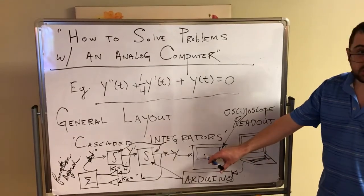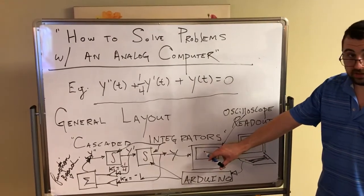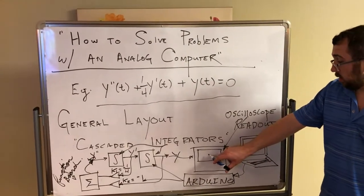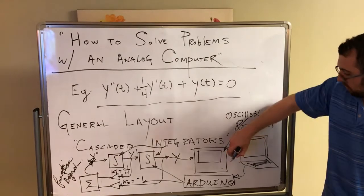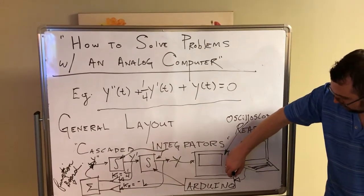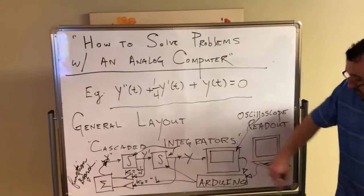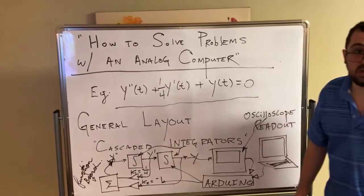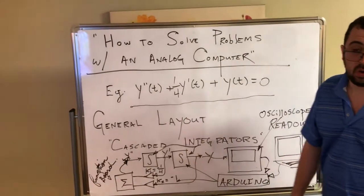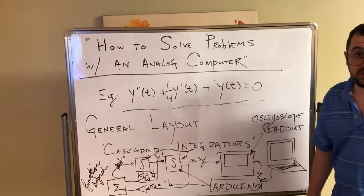You can read out the function on the oscilloscope or oscillograph. It is also possible to feed this back to the Arduino, so you can do things like optimization or record the solutions for later use.